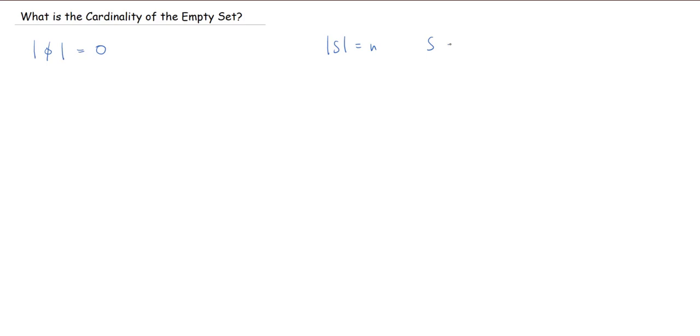The weird issue here is how would we fit that into our definition? Is it even a finite set? We said for it to be a finite set, we should be able to build a bijection with something of the form — a set going from one to n. So that's what we did when we said the cardinality of S was equal to n: there was a bijection between S and what we called n-bar, the set of numbers one through n. So how do we fit the empty set into this world?